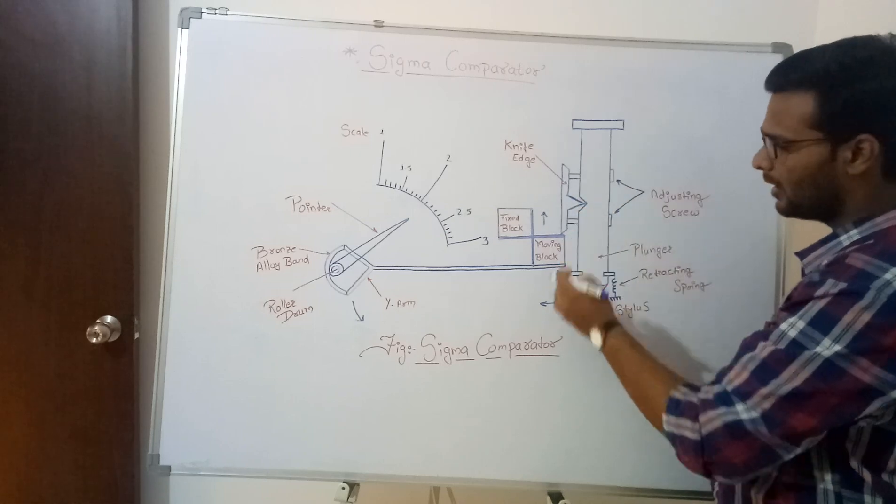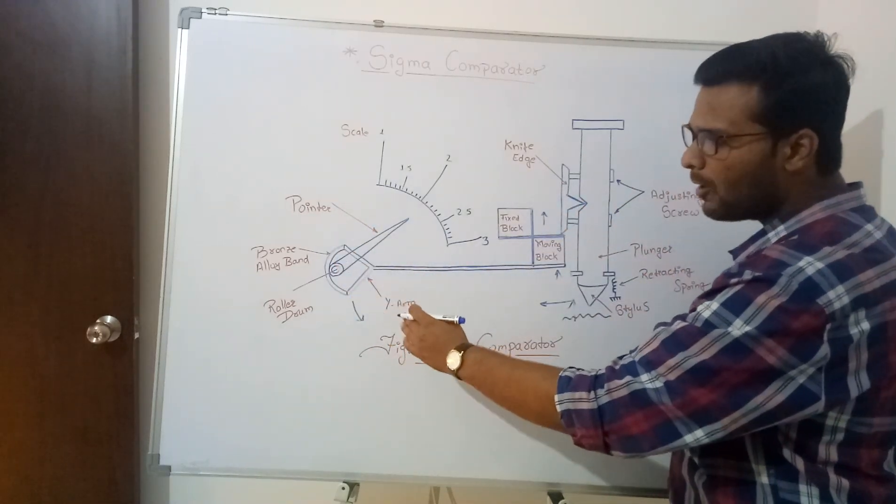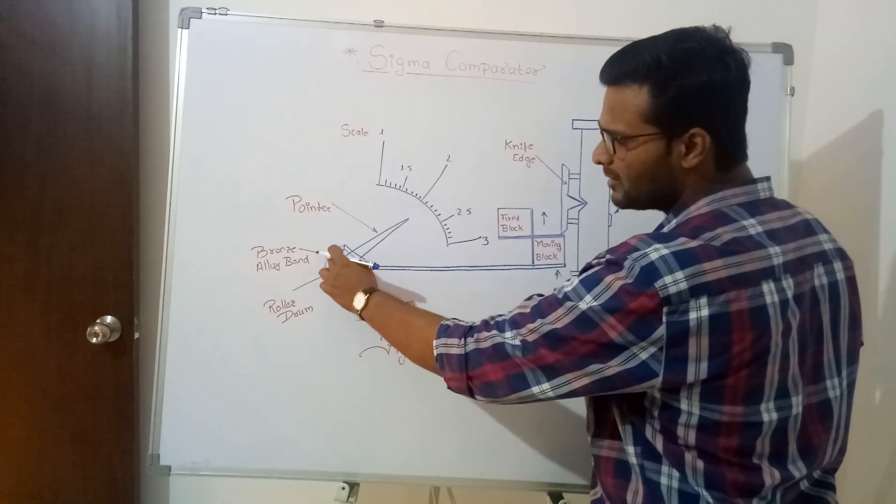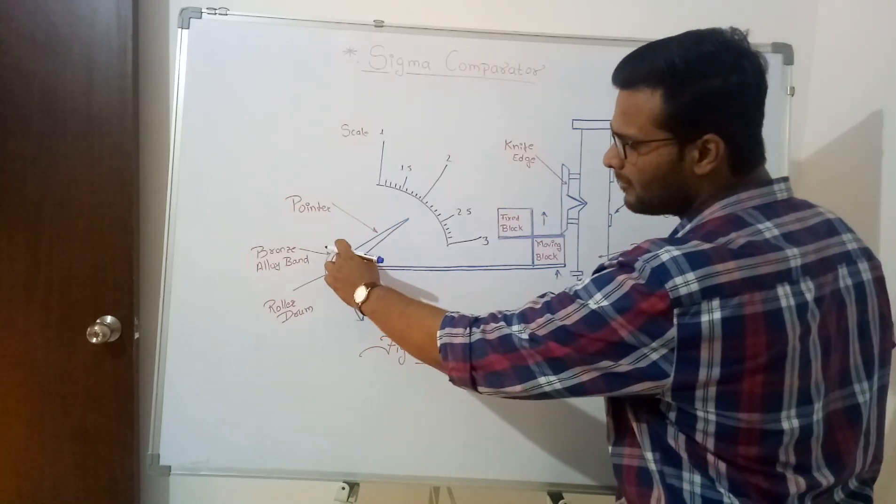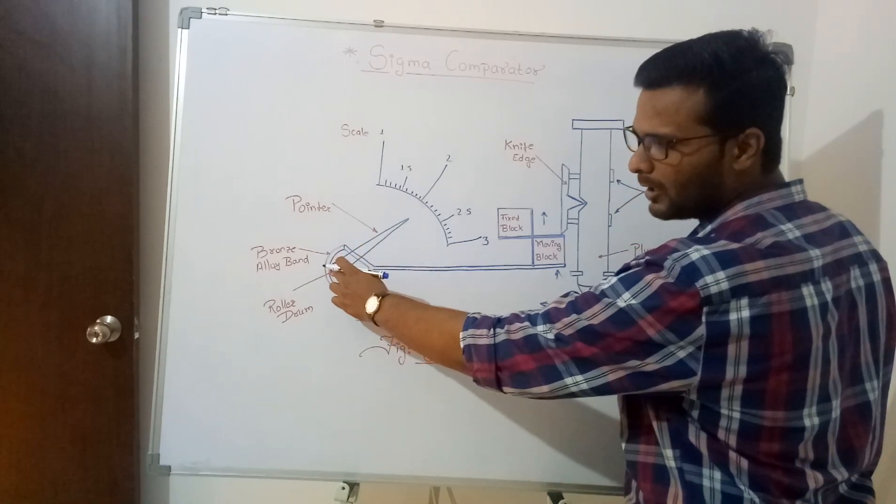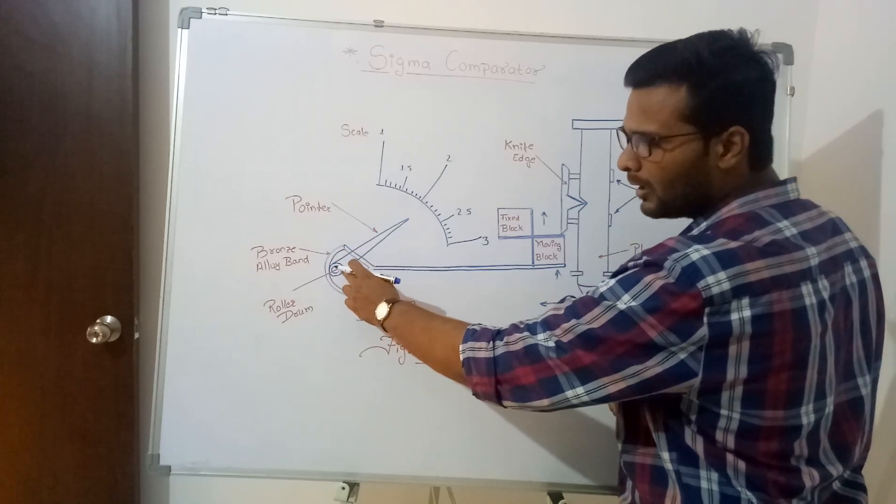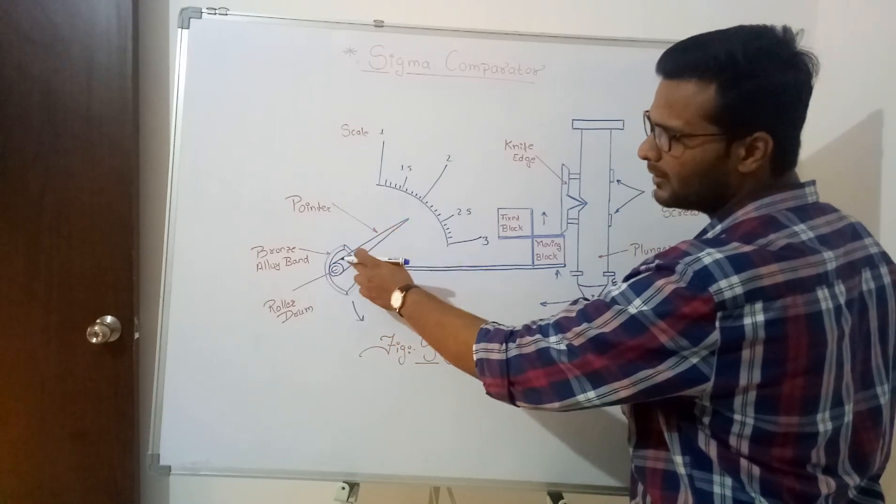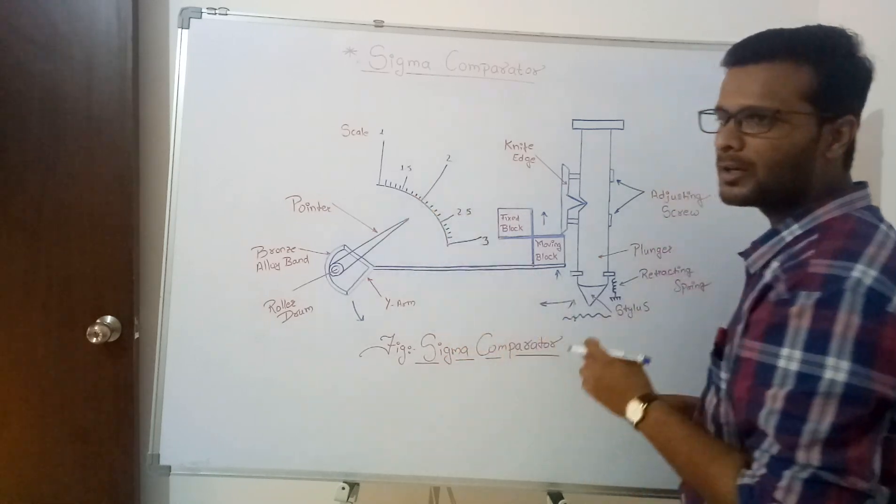Now what happens this drum is in contact with bronze alloy band. What happens as this drum, as this band, it moves in downward direction, it is having contact with the drum, the drum rotates. Due to rotation of the drum, the drum is having pointer and this pointer as it is calibrated to the scale it gives reading of the deflection. It gives reading of the deflection.